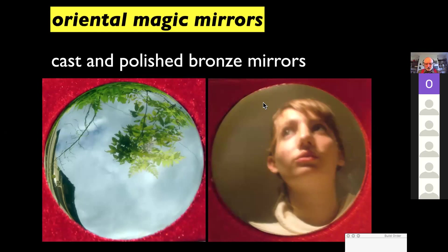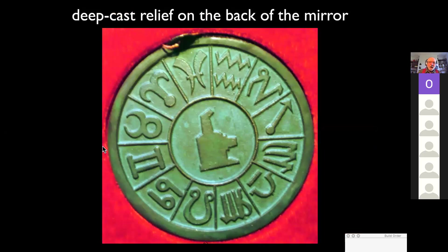They're about 10 or 15 centimeters across. I have several such mirrors. They're made now for tourists. And they're quite good mirrors. Not perfect. Here's my daughter, and there's some trees near where I live. Now, on the back of the mirror is a deep cast pattern, in particular one I have, the signs of the zodiac. Here it is.